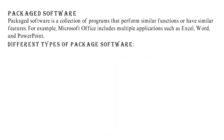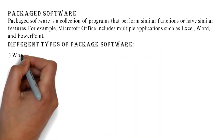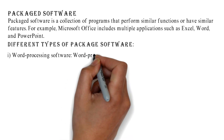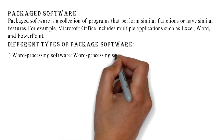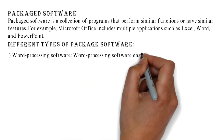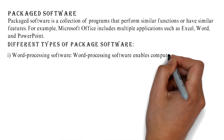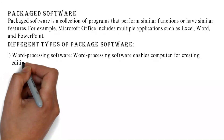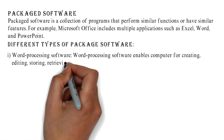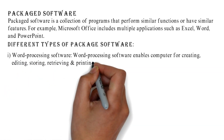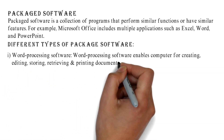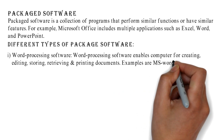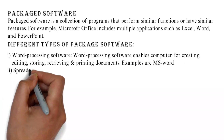Different types of package software: 1. Word processing software enables a computer for creating, editing, storing, retrieving, and printing documents. An example is MS Word.